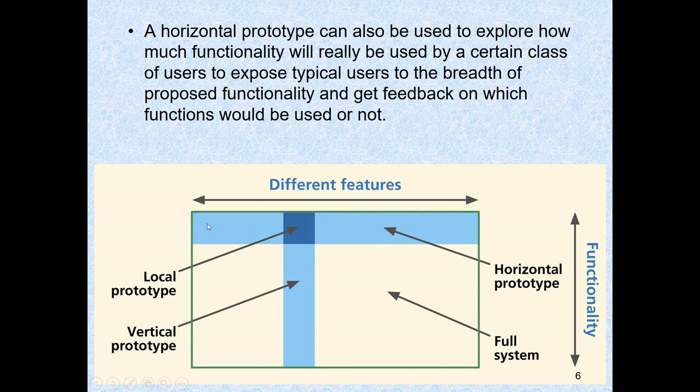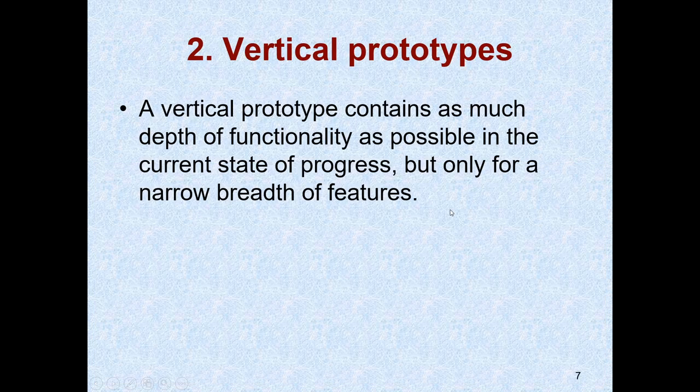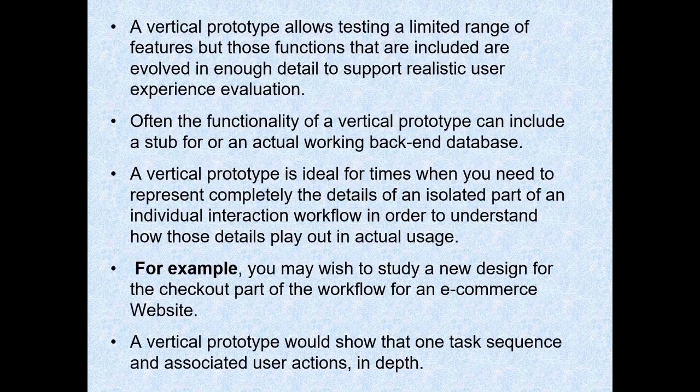Horizontal prototype helps us know how much functionality we need to consider while designing the final product — more features and less functionality. The second prototype is the vertical prototype. Vertical prototype has more functionality but less features. We use it whenever we want to show the complete working of a specific module to the client, showing less features which are fully functional.